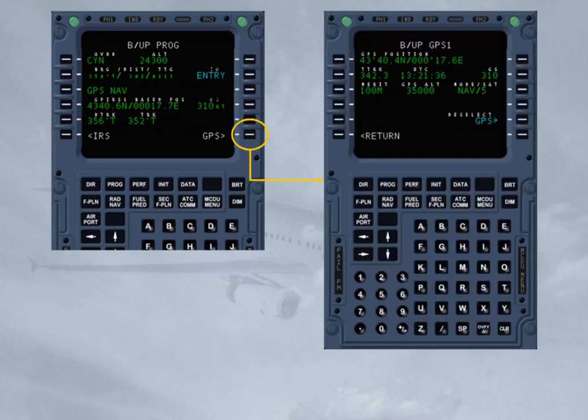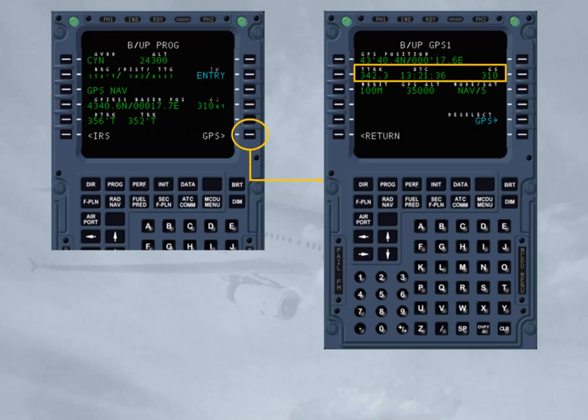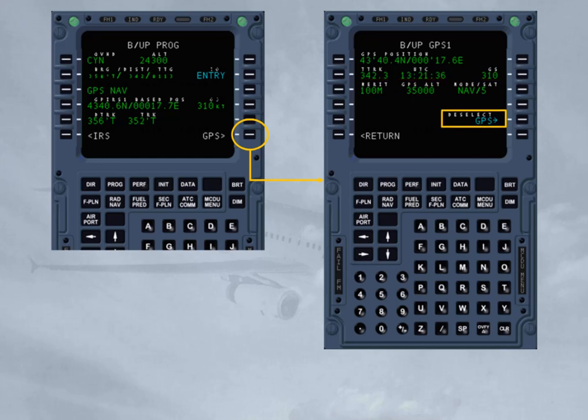Here is an example of a Backup GPS page. This page displays, from Line 1 to 3: the current GPS position, true track, UTC, ground speed, figure of merit, altitude, mode of operation, and number of currently tracked satellites. Line 5 allows the de-selection of the GPS for the NAV Backup, but not for the regular FM navigation. Line 6 allows going back to Backup Progress.